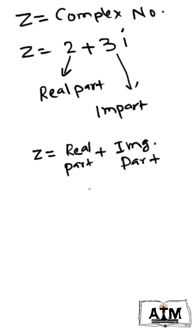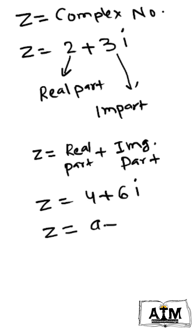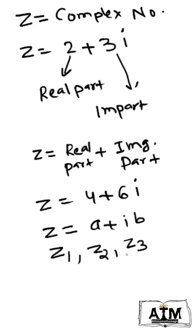A complex number is the combination of a real part and an imaginary part. One more example: z equals 4 plus 6i, so 4 is the real part and 6i is the imaginary part. In general, a complex number can be written as a plus ib. If there are more than one complex number, the first is written as z1, the second as z2, the third as z3. For example, z1 equals 2 plus 3i.